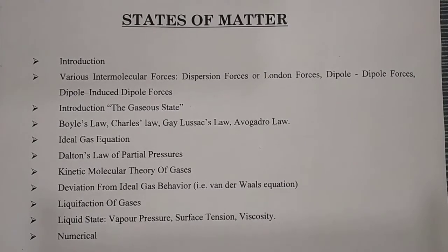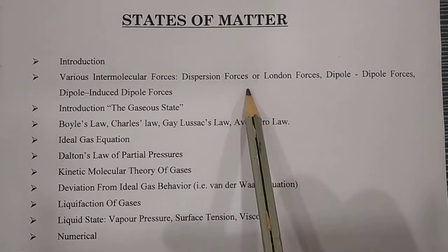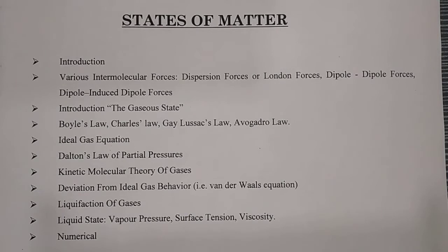In the synopsis, first we discuss what matter actually means — that is the introduction to this chapter. Then the first part covers various types of intermolecular forces. There are three types: dispersion force or London force, dipole-dipole force, and dipole-induced dipole force. Then we introduce what the gaseous state means — definition of the gas state and its characteristics.